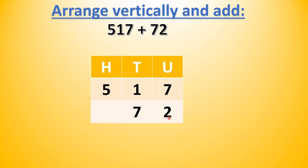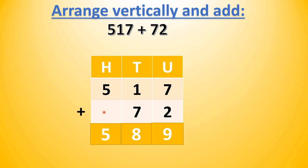So we write 7 in the tens column and 2 in the units column. Now we write the plus sign — write the plus sign without fail. First we add the units place: 7 plus 2 we get 9. Then 1 plus 7 gives us 8 tens. 5 hundreds plus 0 gives us 5 hundreds. So 517 plus 72 we get 589.